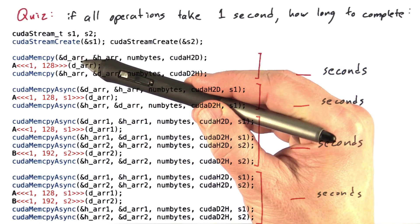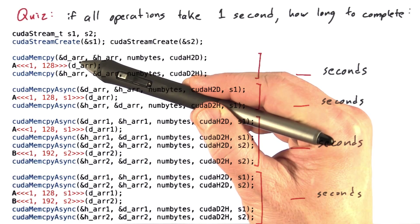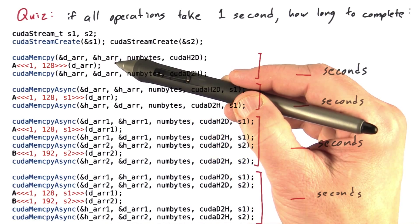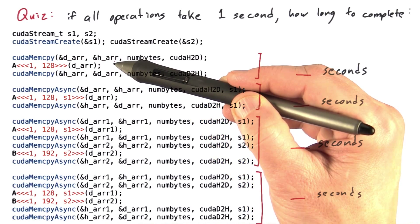You can assume that dArray has been allocated with CUDA malloc and it is a pointer to some device memory, and that hArray has been allocated in pinned host memory using CUDA host malloc.